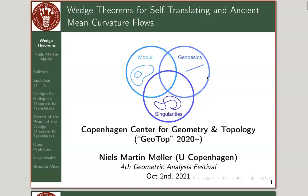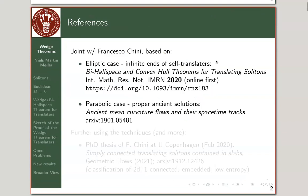Hello, I'm Nels-Martin Møller from Copenhagen, from the Copenhagen Center of Geometry and Topology at Copenhagen University's Department of Mathematical Sciences, also known as GeoTop. I'm ready to talk to you about these so-called wedge theorems for mean curvature flows that are self-translating, or in more generality, ancient flows. Let us get started.